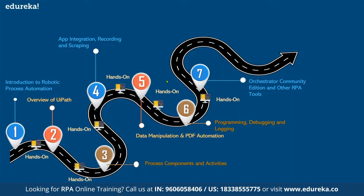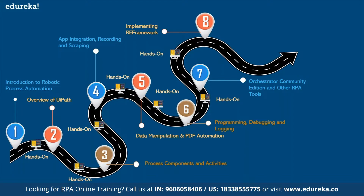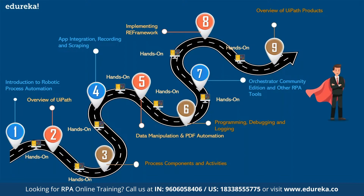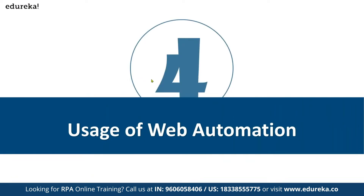After that, we cover Orchestrator and the Community Edition, along with other RPA tools. The Community Edition is free for students to install and use. We also compare UiPath with tools like Automation Anywhere. Throughout the journey, hands-on training and a full project are provided, including a project for certification. We also implement the RE Framework — a best-practices framework created by UiPath — which helps even newer programmers structure their automation projects effectively.